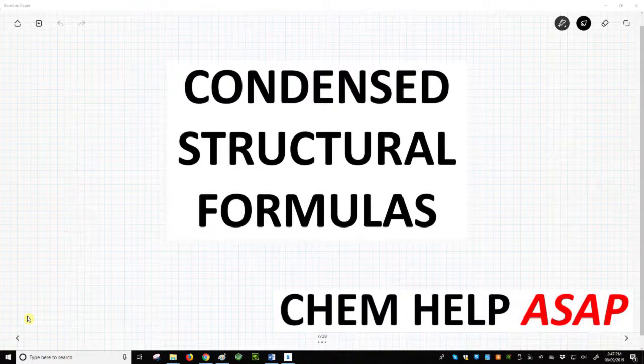Condensed structural formulas are often used when you want to show a molecule structure, but you need to write it in a line of text instead of as a picture, like in the Lewis dot structure.